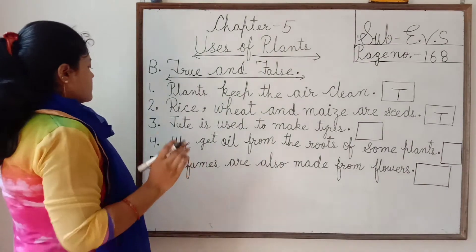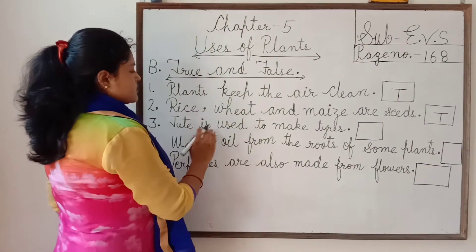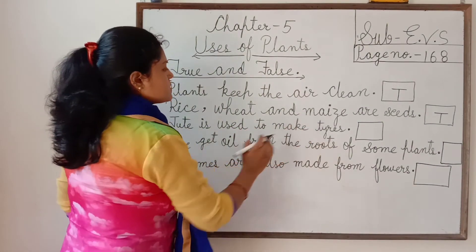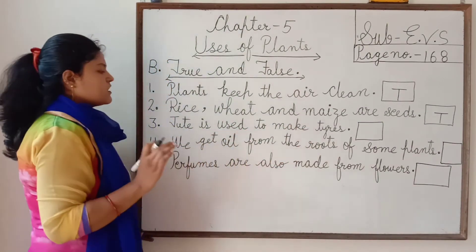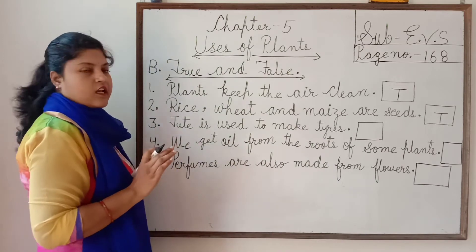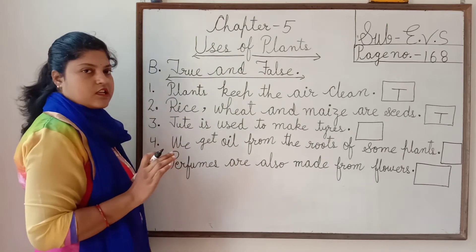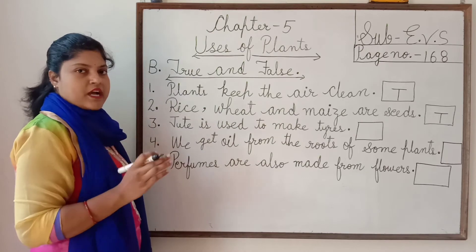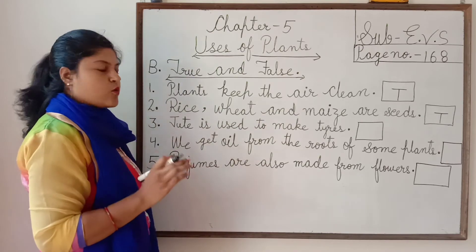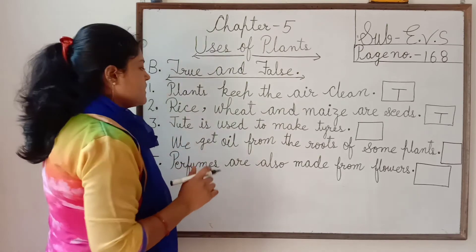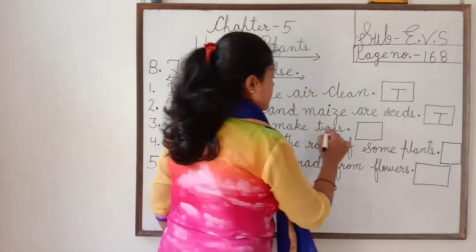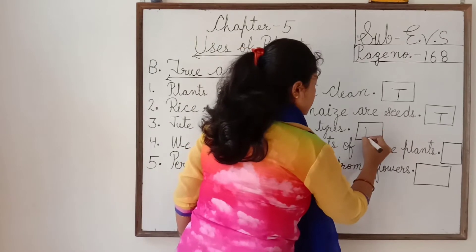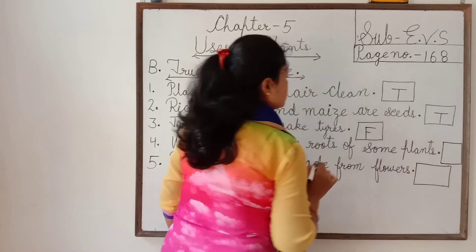Question number 3: jute is used to make tires. Students, jute tires make kerne ke liye use kiye jate hai? No. Jute beds, mats and ropes make kerne ke liye use kiye jate hai. So, the answer is false. Right here, false.